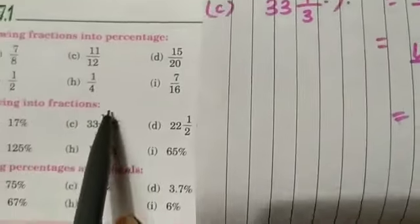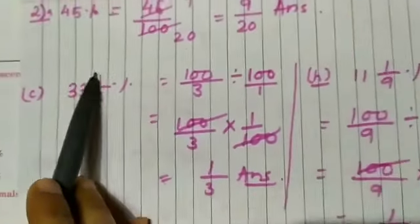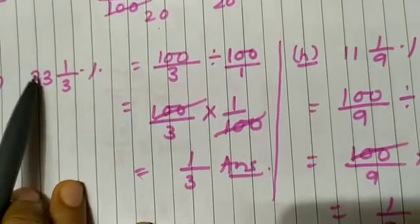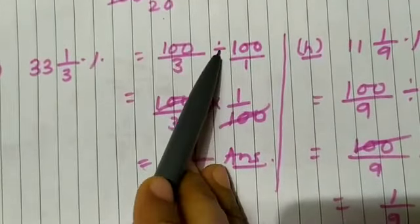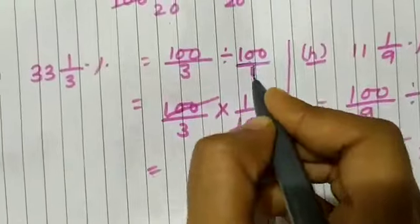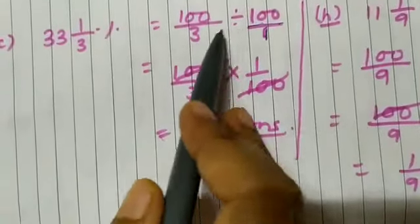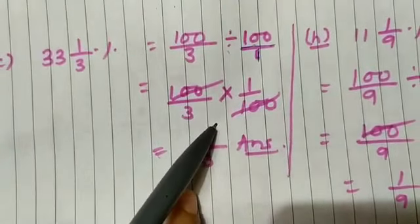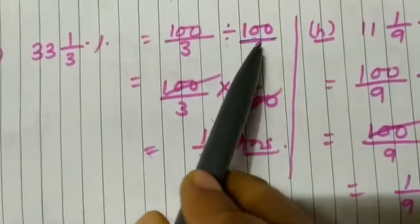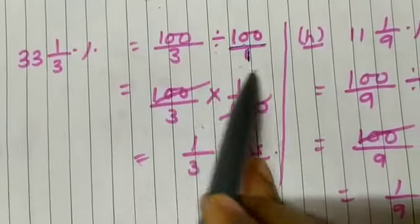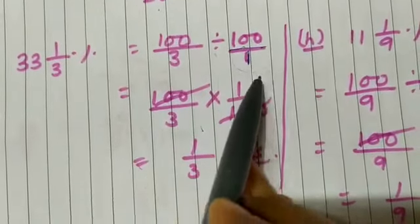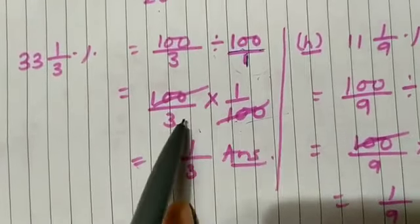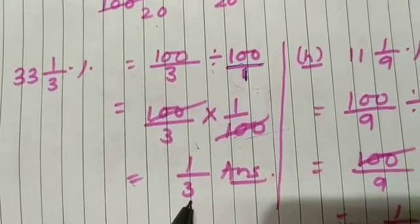In the same way, C number: 33 whole 1 by 3 percent. We convert the mixed fraction into improper fraction: 3 into 33 equals 99 plus 1 equals 100, so 100 by 3. Then divide by 100: 100 by 3 divided by 100 by 1. We change division to multiplication and take reciprocal — 100 and 100 cancel — leaving 1 by 3. So 1 by 3 is the answer.